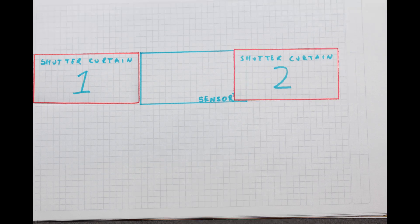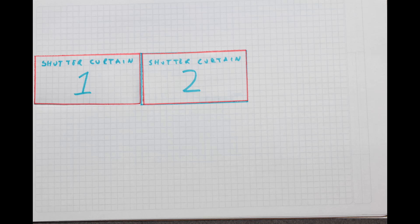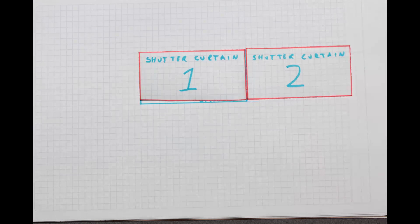When the exposure is done, the second shutter curtain moves across to close again. Together they move back to be ready for the next photo.